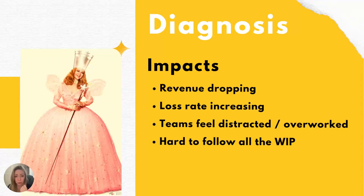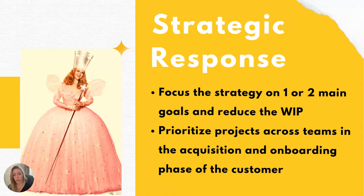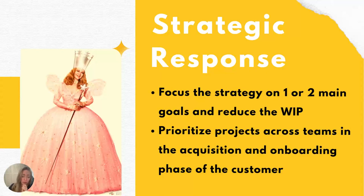Further diagnosis: why does it matter? Revenue is dropping, the loss rate is increasing, teams feel distracted and overworked, and it's hard for managers to follow all work in progress. So the strategic response would be: focus that strategy on one or two main goals to reduce work in progress and prioritize projects across teams in the acquisition and onboarding phase of the customer, because that's where most people are dropping out of the funnel.